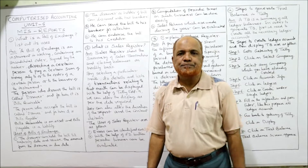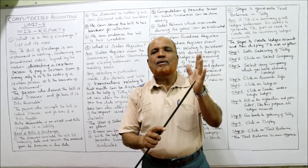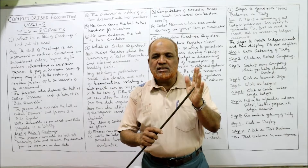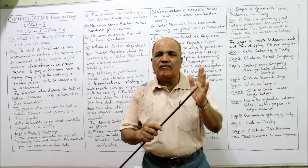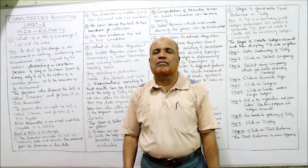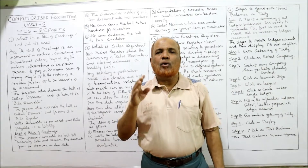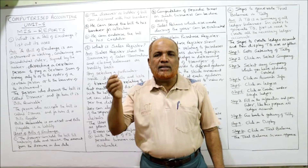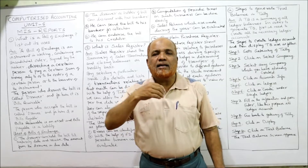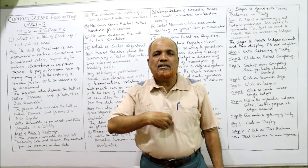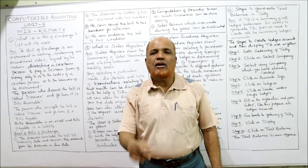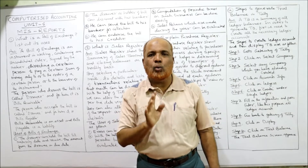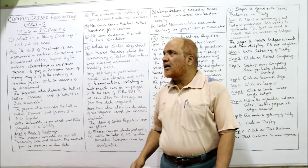First use: the drawer can hold the bill till the maturity date and receive the amount from the drawee on the due date. For example, if the duration of the bill is three months, the drawer holds it for three months, then presents it to the drawee, who makes the payment.